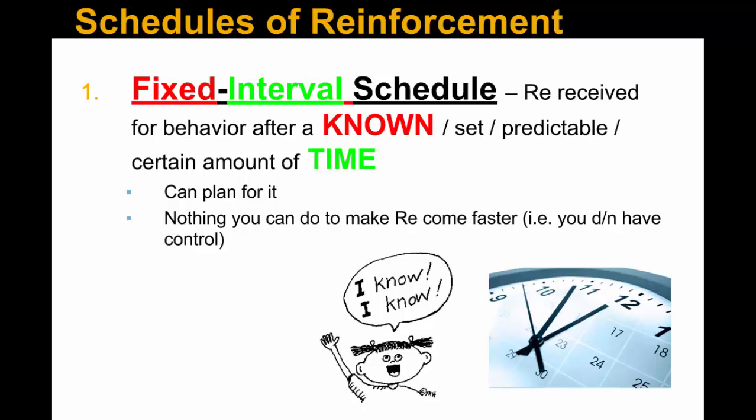Another example is setting a timer when you're studying — reward yourself after a specific amount of time, say 30 minutes, then give yourself a 10-minute break. Also, baking cookies: chocolate chip cookies take about 12 minutes in the oven. My kids are sitting there waiting for those cookies, they see the timer showing 12 minutes, and they have to wait before they're rewarded. Those are all fixed interval schedules.